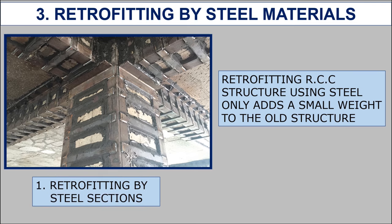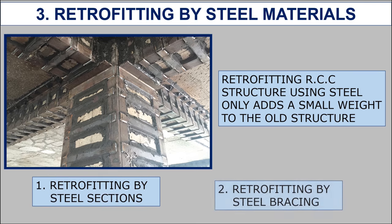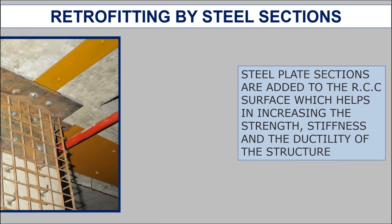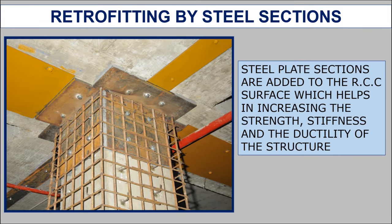Retrofitting by steel sections involves adding steel plate sections to the RCC surface, which helps in increasing the strength, stiffness, and ductility of the structure. Based on the property to be enhanced, the steel plate section can be added either vertically or horizontally.